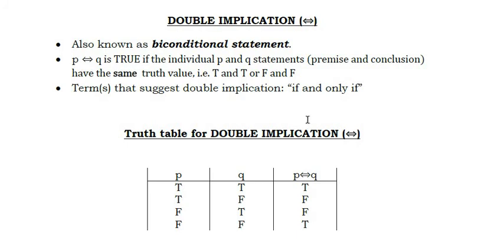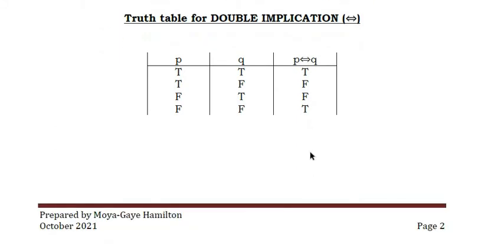For the double implication, it's the if-and-only-if statement. It also has a premise and a conclusion. The statement to the left of the arrow is called the premise and the statement to the right of the arrowhead is called the conclusion. For the double implication to be true, both the premise and conclusion would have to be true; if there is a true-false combination, the double implication would be false.